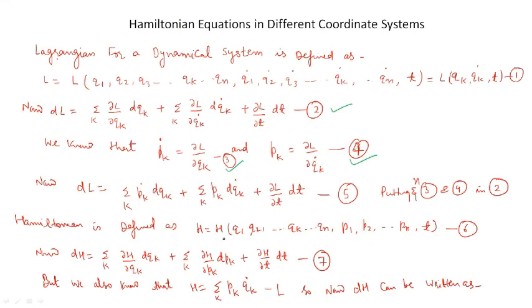So if we take the exact differentiation of equation number 6, then we find that dH equal to sigma_k (del H / del qk) dqk plus sigma_k (del H / del pk) dpk plus (del H / del t) dt. Let us say it is equation number 7.